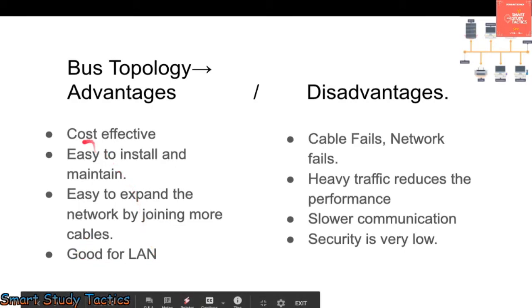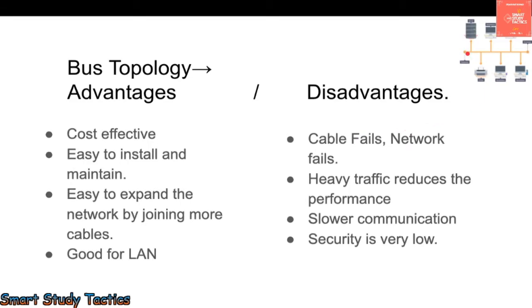The disadvantages of bus topology: if the cable fails, the entire network fails, since everything depends on that central cable. Heavy traffic reduces performance because there is only a single path. If more data is coming or going, your speed will slow down — slower communications. Security is also very low in bus topology.